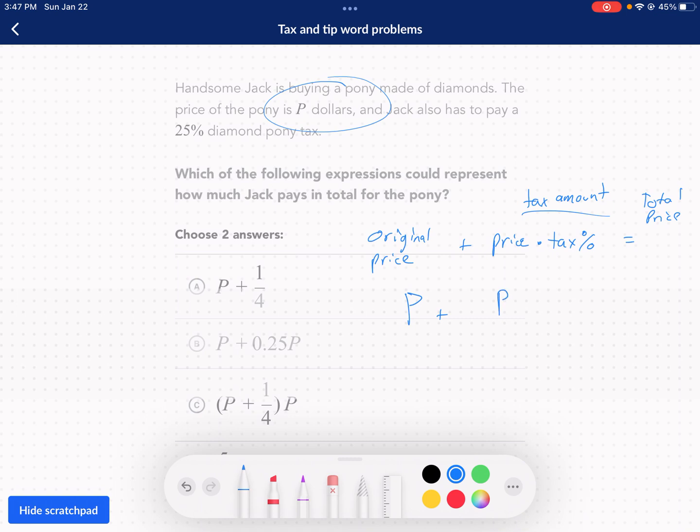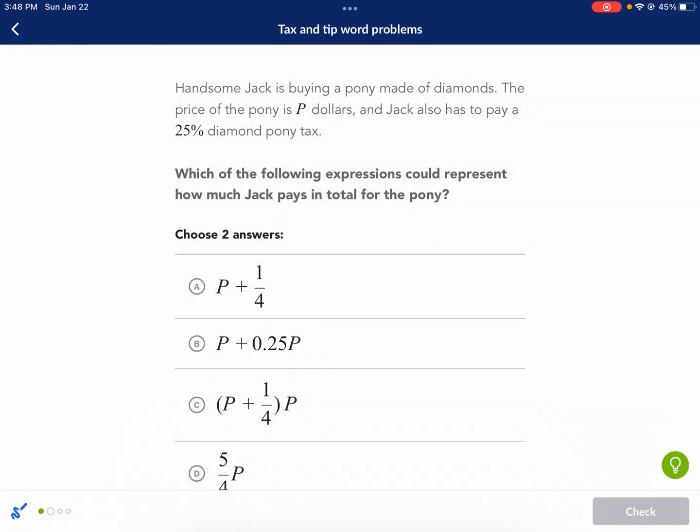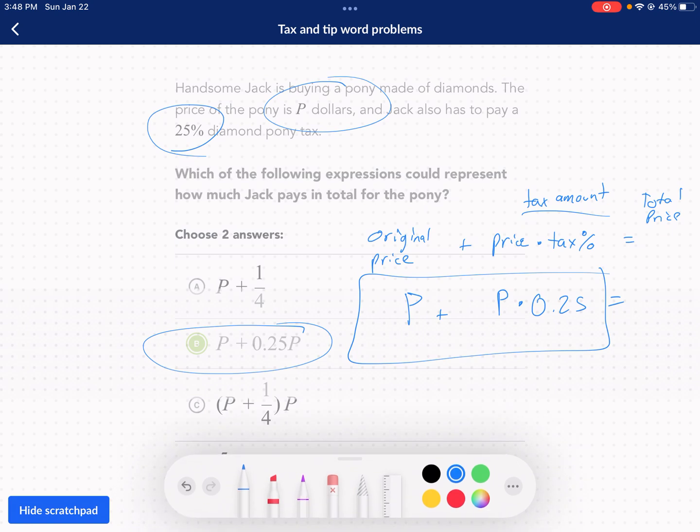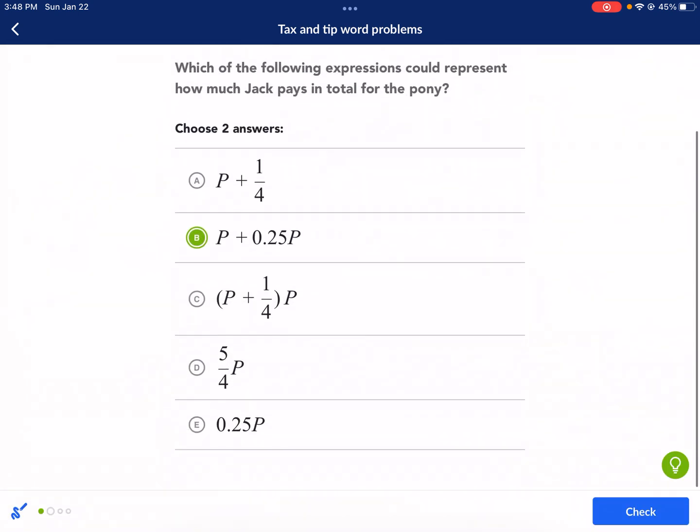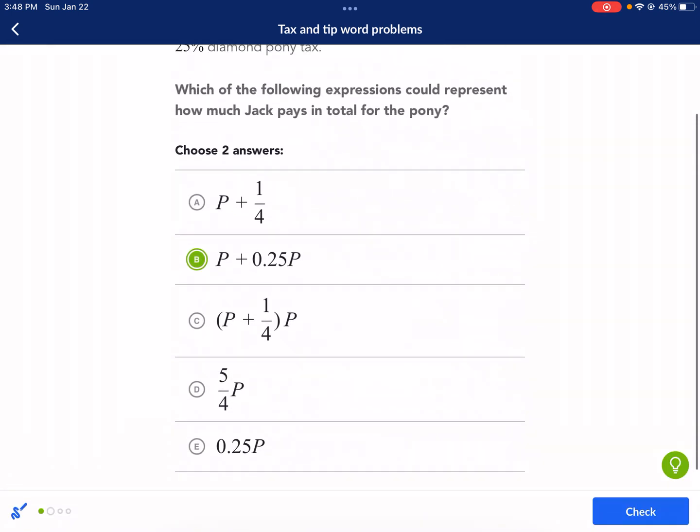But if we want the total amount, the total price, that's going to be equal to the tax amount plus the original price. So that's an extra step with that. So we're going to go over a couple of these choices. We need the original price P plus the price times the tax percentage. Well, in this case, our price was P and then our tax percentage is 25%. So we need to multiply this by 0.25 and that's going to give us our total price. So we're looking for something that looks like this here. So we have P plus 0.25P right here. So option B, but we need to choose two answers, it says, okay, so let's look for another option.